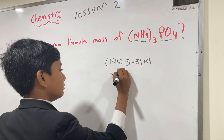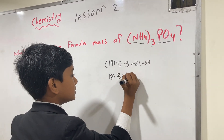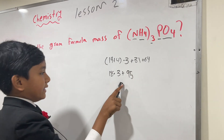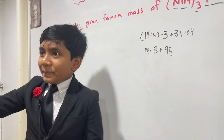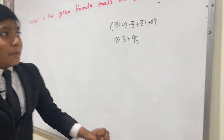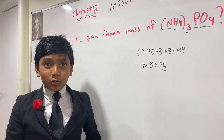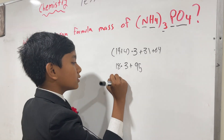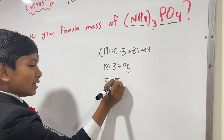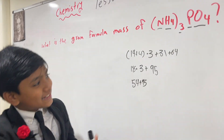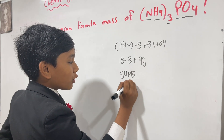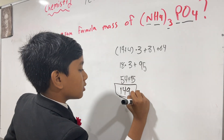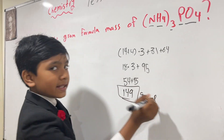So now this comes out to 18 times 3 plus 95. 18 times 3 is equivalent to... [calculator sounds] ...set up.